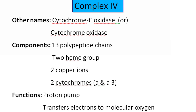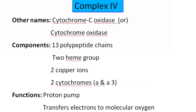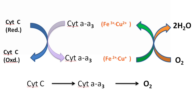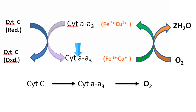Complex IV is the terminal component of the electron transport chain. The other names are cytochrome C oxidase or cytochrome oxidase. The components include polypeptide chains, two heme groups, two copper ions, and two cytochromes — cytochrome A and A3. Complex IV acts as a proton pump and also transfers electrons to molecular oxygen. Reduced cytochrome C transfers its electrons to cytochrome AA3, which is then reduced and transfers its electrons to molecular oxygen, converting it into water. The flow of electrons is: cytochrome C → cytochrome AA3 → oxygen.